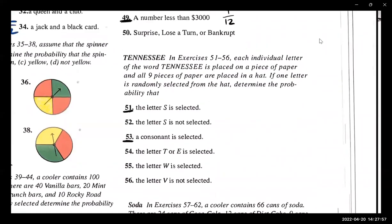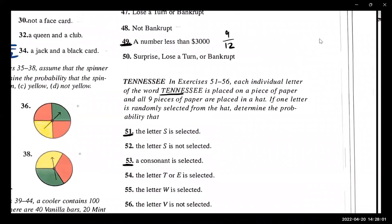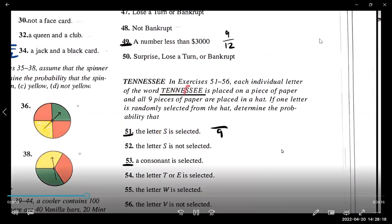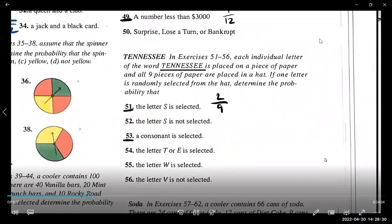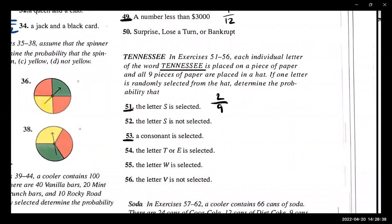Number 51 says the letter S is selected from the word Tennessee. There are nine total letters in Tennessee, so the denominator is nine. There are two S's, so the probability is two out of nine. Now for number 53, a consonant — the consonants are the ones that are not vowels. In Tennessee, the consonants are T, N, N, S, S — that's five consonants. So five out of nine.